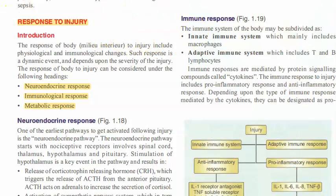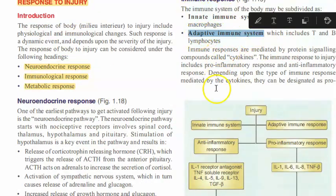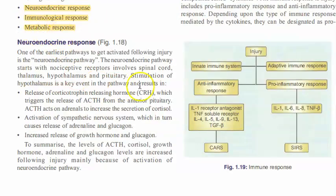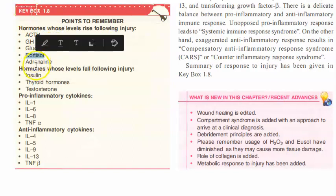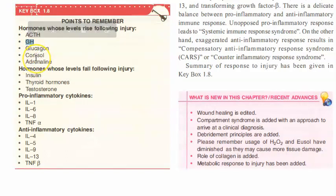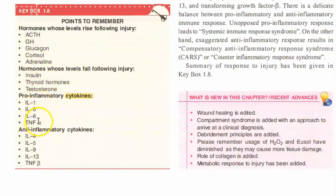As extra information on response to injury: there is a neuroendocrine response, an immunological response, and a metabolic response. The neuroendocrine response means some hormones are released more and some less. For immunological response, you have innate immunity, adaptive immunity, and acquired immunity. Hormones whose levels rise after injury include adrenocorticotropic hormone (ACTH), cortisol, adrenaline, glucagon, and growth hormone. Cytokines like interleukin-1, interleukin-6, interleukin-8, and tumor necrosis factor alpha are pro-inflammatory ones to remember.